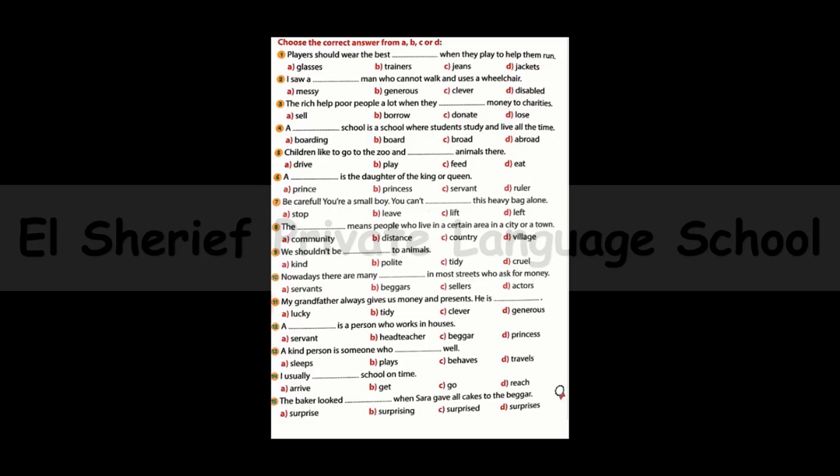Number three: The rich help poor people a lot when they ___ money to charities. The options are: sell, borrow, donate, or lose. The answer is: the rich help poor people a lot when they donate money to charities.